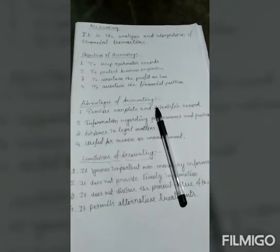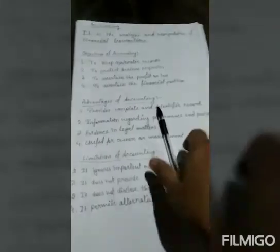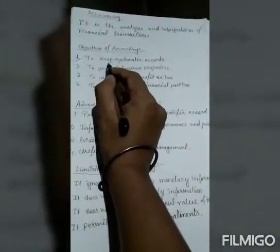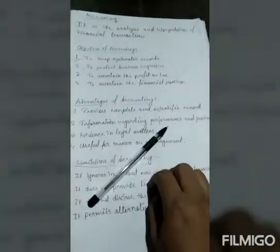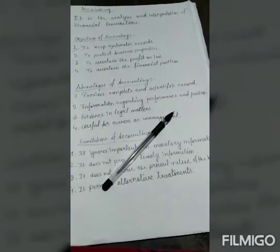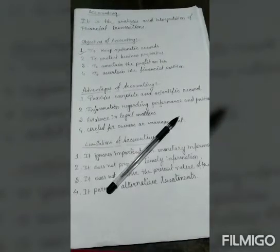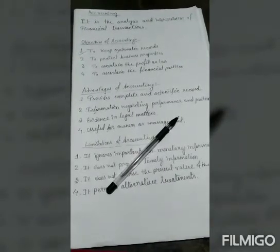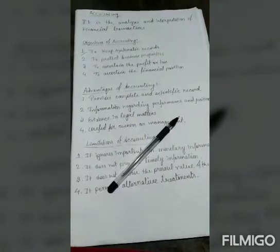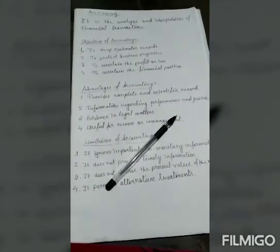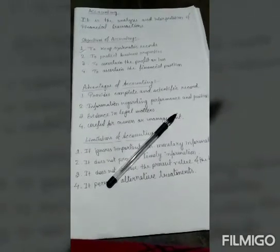Now, let us discuss the objectives of accounting. The first objective of accounting is to keep systematic records. Accounting is done to keep a systematic record of financial transactions. In the absence of accounting, there would have been terrific burden on human memory, which in most cases would have been impossible to bear.